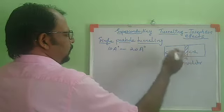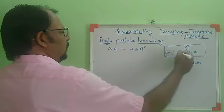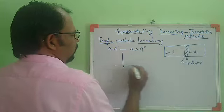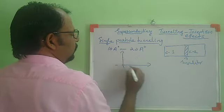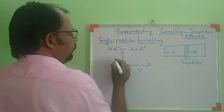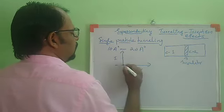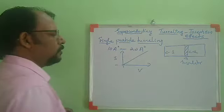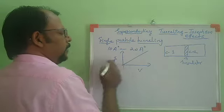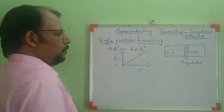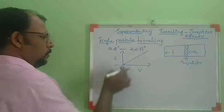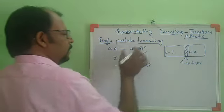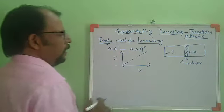The junction obeys Ohm's law — the current through the junction and the potential are proportional. The variation of current through the junction can be drawn as a linear V-I curve, which obeys Ohm's law, meaning V and I are proportional.